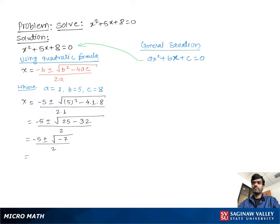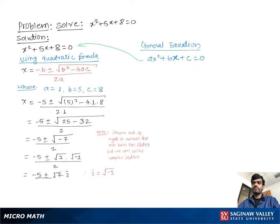Then we can write negative 5 plus or minus square root of 7 times square root of negative 1, which is the same as square root of negative 7, over 2. Then we can write negative 5 plus or minus square root 7 times i, where i is denoted as square root of negative 1, over 2.